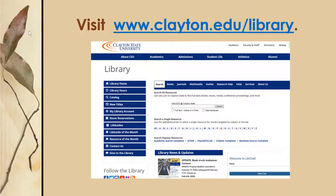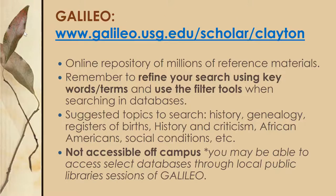You can visit our library's homepage at clayton.edu/library. The Galileo search box is in the middle of the page, and this box searches over 200 databases at one time.